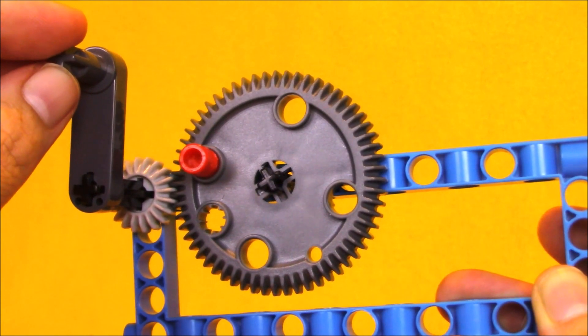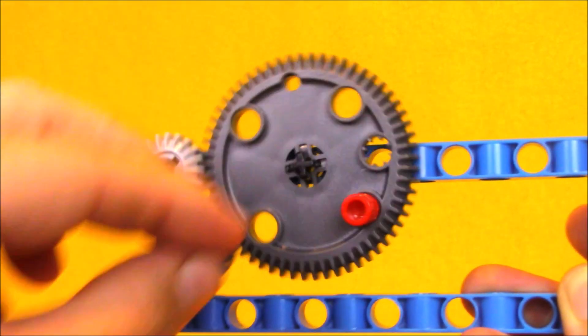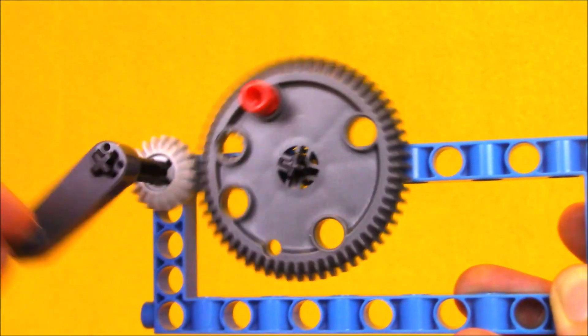You can do experiments with gear ratio. Watch how many times I have to crank the handle to get the red peg to go all the way around. One. Two. Three.